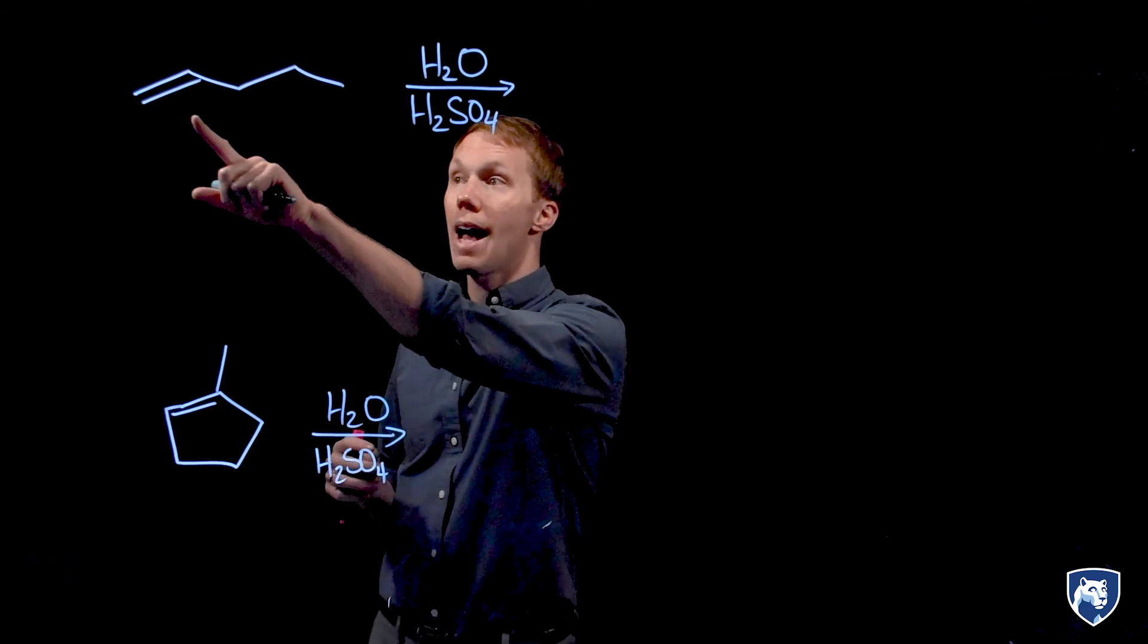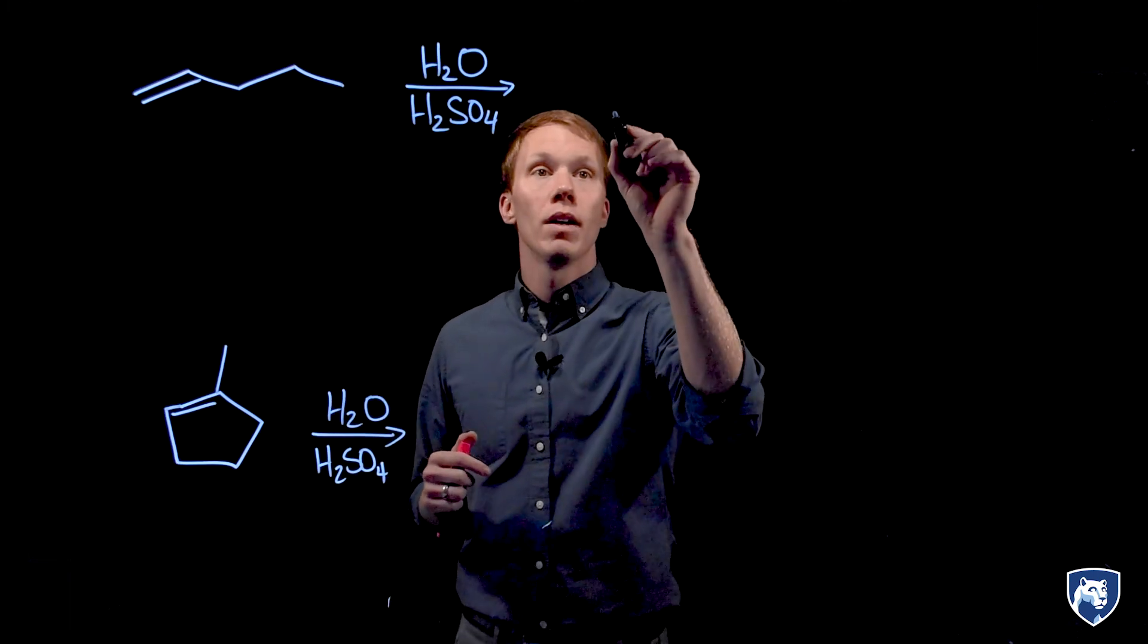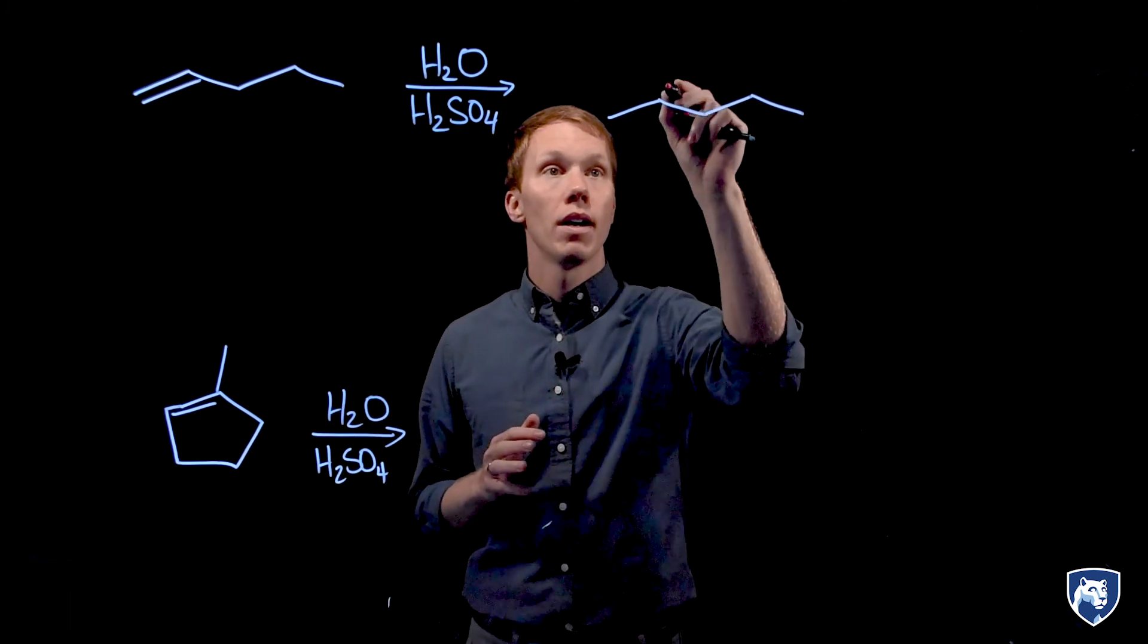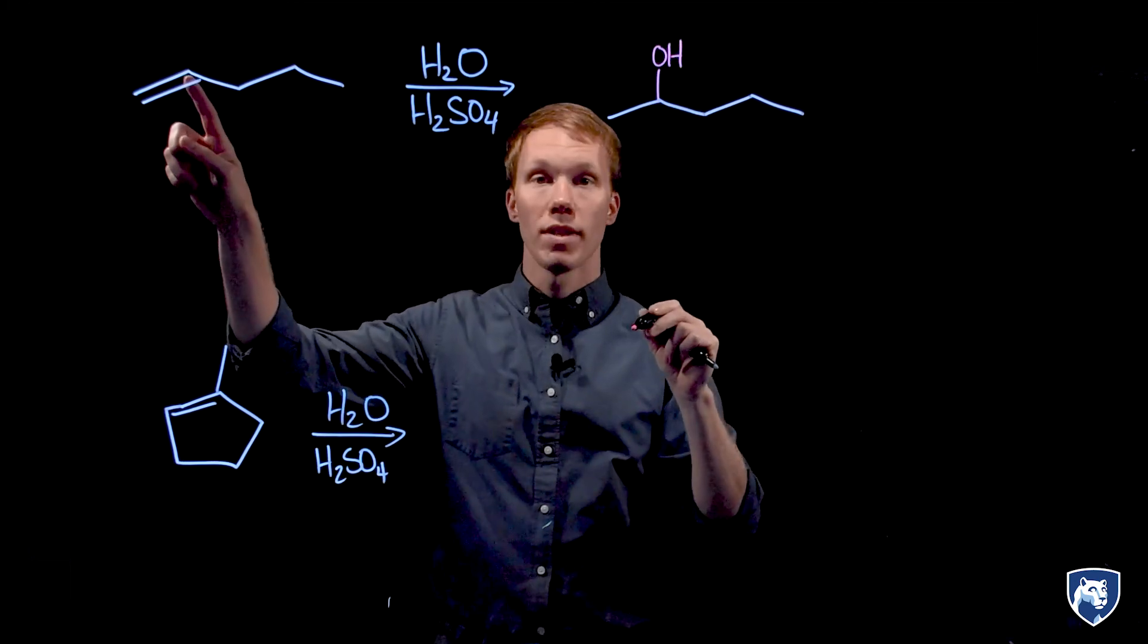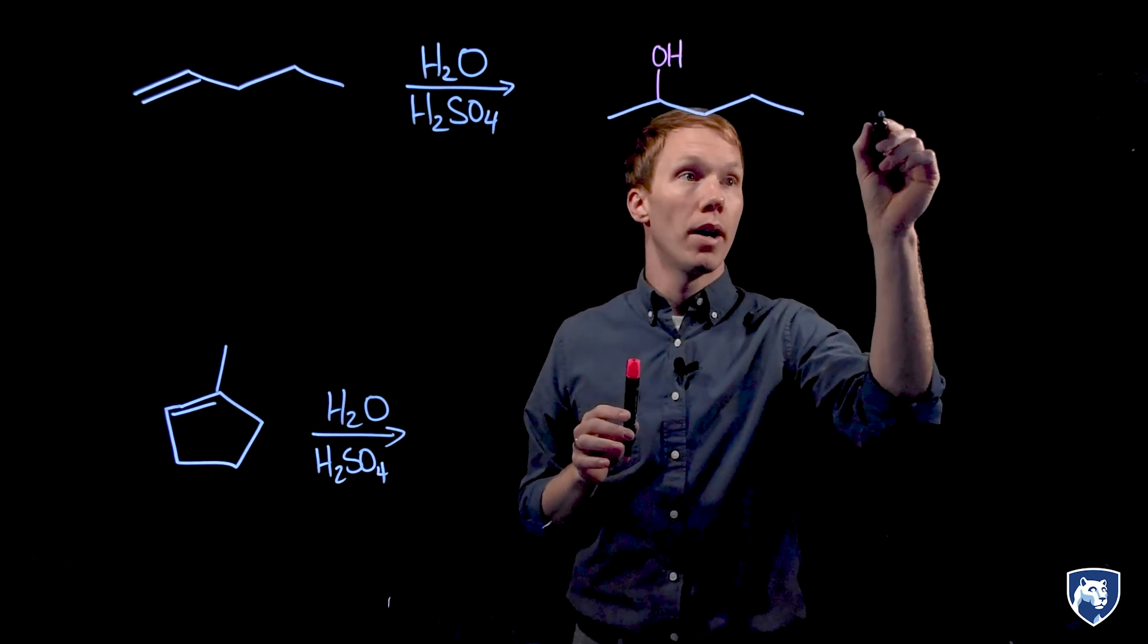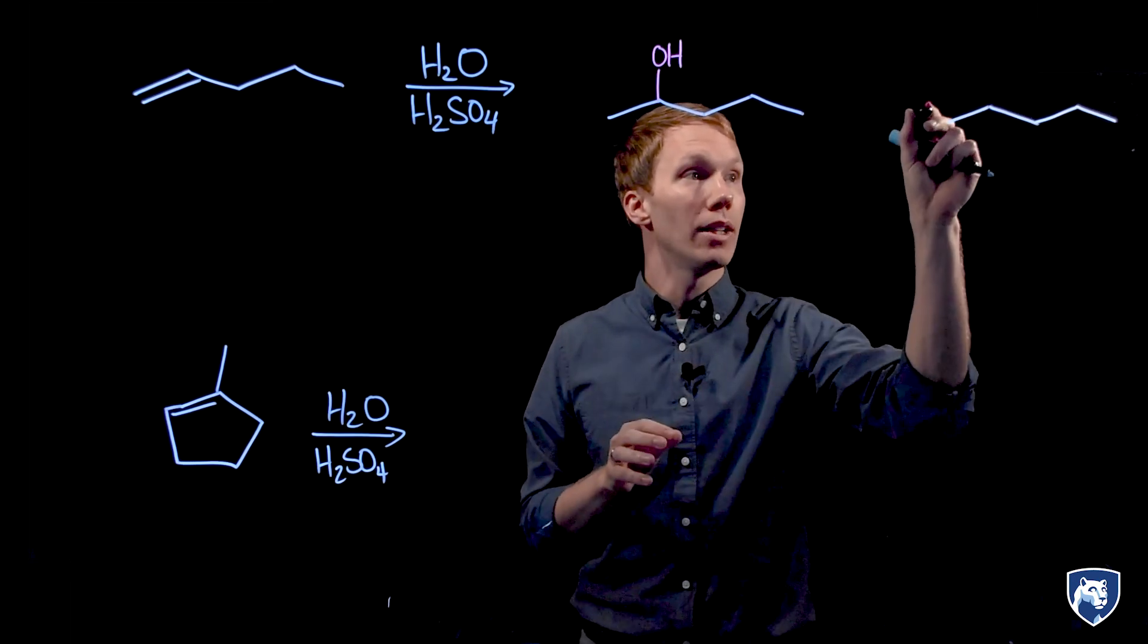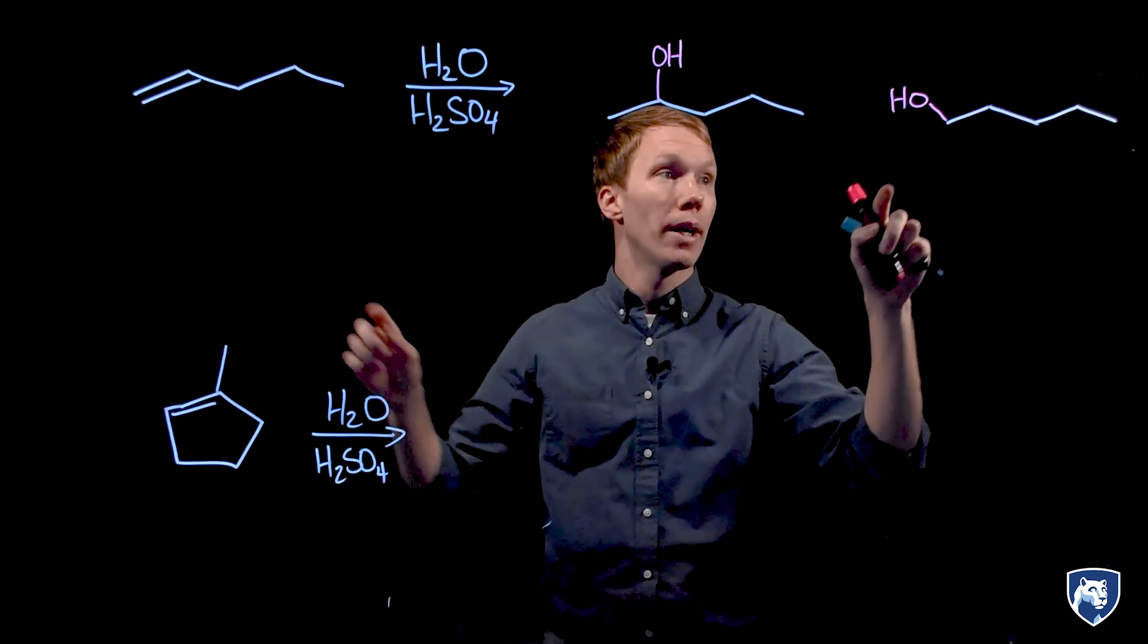In our first example here we have a monosubstituted alkene 1-pentene. When we add water across this alkene, we can add the OH group to the more substituted site. Here it is secondary, and the hydrogens are implied based on the bond line drawings. Or I could add the OH to the less substituted site. Here it is primary.